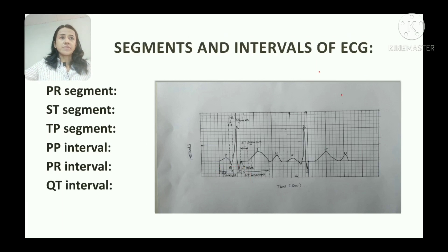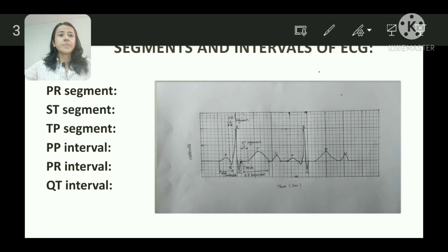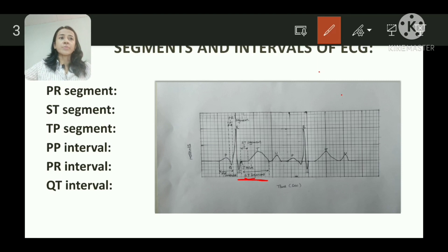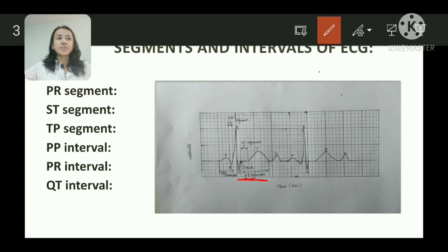Next is the QT interval. It is the interval from the onset of the Q wave to the end of the T wave, as seen in the diagram. It denotes the systolic time of the ventricle, that is, ventricular depolarization and repolarization. Its duration is 0.4 seconds. Clinically, the QT interval is prolonged in ischemia, ventricular conduction defects, and hypokalemia.